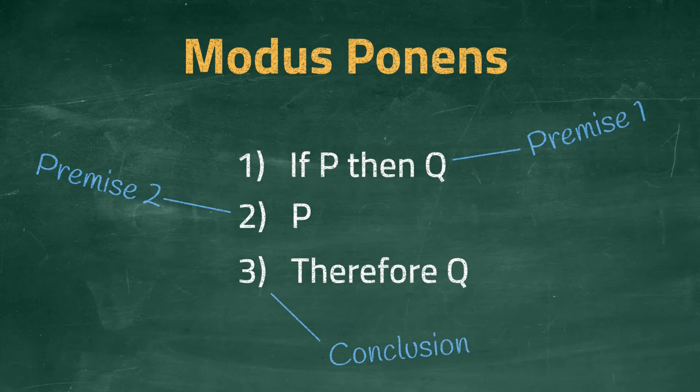Now this might seem obvious. The initial premise did say that if P is true, then Q must also be true. And we assume this premise to be correct. So if we also know that P is true, then the conclusion must be Q is also true.